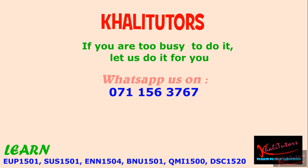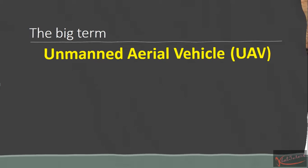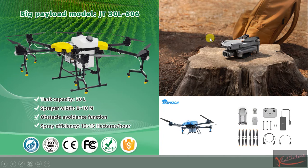So what is Section B all about? The big term in that section is the unmanned aerial vehicle. Basically a drone is an unmanned aerial vehicle. I've included about three types of drones here. This first one has a container in which you can put water, pesticides, or any other chemicals to apply on your field. This one is a bit more expensive.